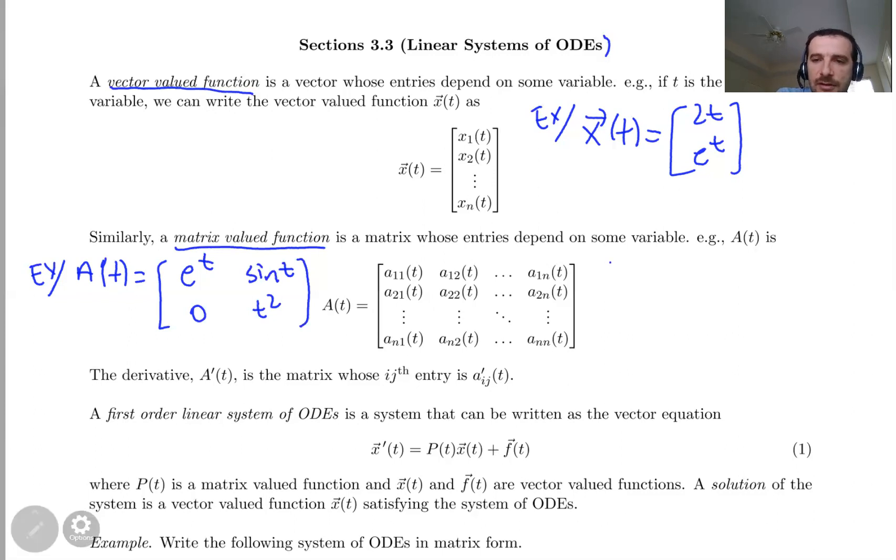This derivative will be just the derivative of each entry independently. For example, take the derivative of the matrix-valued function in the previous example. I'm going to take the derivative of each component separately. The derivative of e to the t is e to the t, the derivative of 0 is 0, the derivative of sine t is cosine t, and the derivative of t squared is 2t.